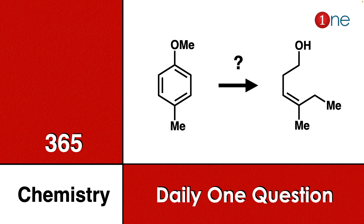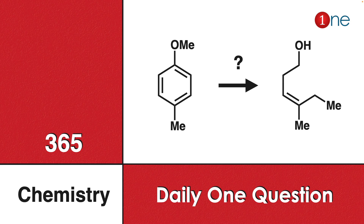Welcome to One Chemistry. This is the 365 Chemistry series — daily one question for you. The starting material is para-methyl anisole. You are getting a straight-chain product with alkene, methyl groups, and an alcohol. You have to find the way to achieve this through various reagents and intermediaries.